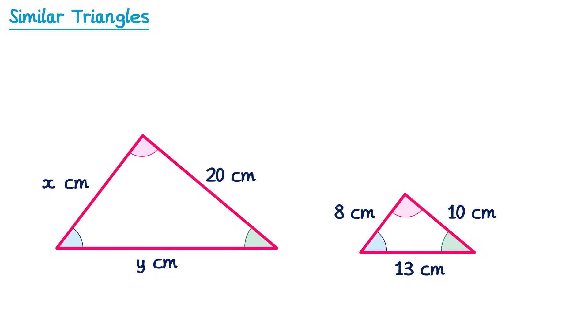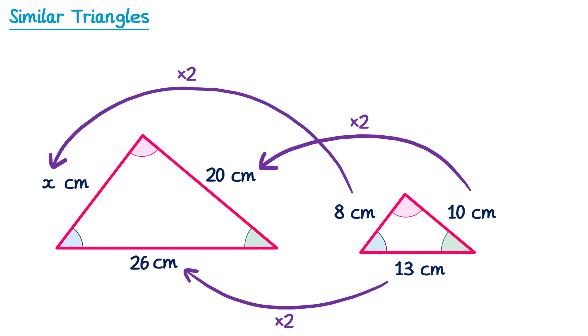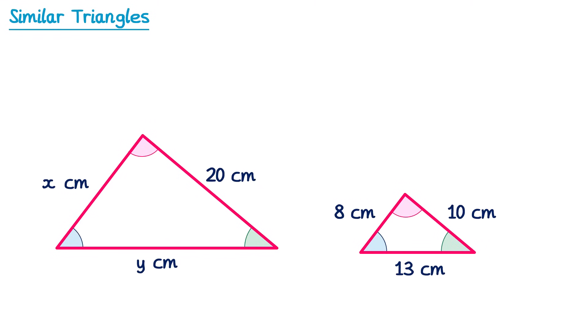Now let's find the missing values. To get from 10 to 20 we multiply by 2, so we multiply the 13 by 2 to get Y, giving 26. Similarly, we multiply the 8 by 2 to get X, so X equals 16. This uses the technique from the previous video on similar shapes, but we'll also show how to solve it using fractions — which will be especially useful for questions later in this video.